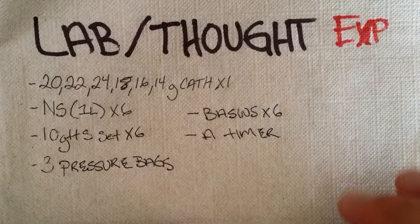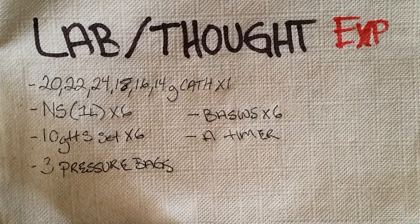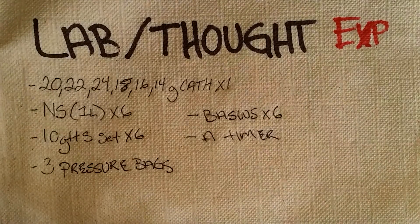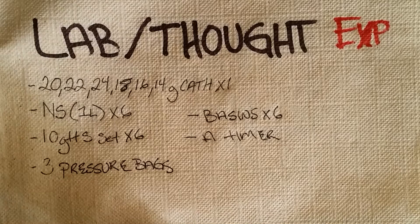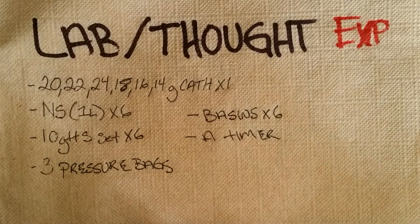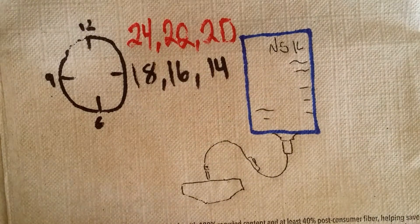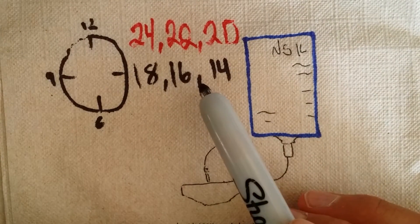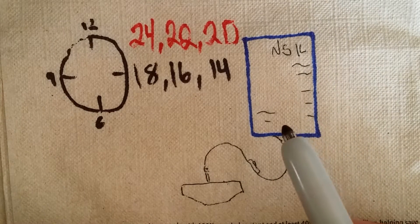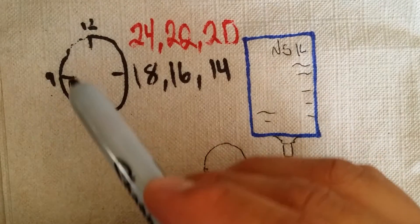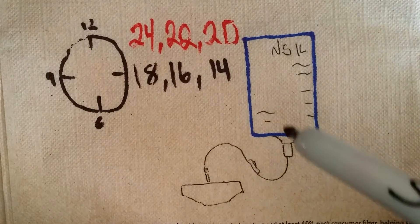We're going to do a lab and thought experiment to tie this in to pre-hospital practice. This is actually a lab I did at one of my trauma lectures that went over very well. The equipment you need: a 20, 22, 24, 18, 16, and 14 gauge catheter; a one-liter bag of normal saline for each; a 10 drop set for each; three pressure bags; six basins so we don't make a mess; and a timer. You give at least six students different size catheters, each with a liter bag of normal saline, a 10 drop set, and a basin, and you measure how long it takes for each catheter to empty the bag.